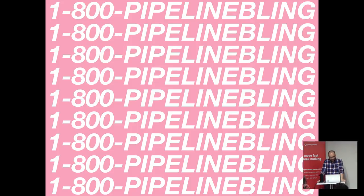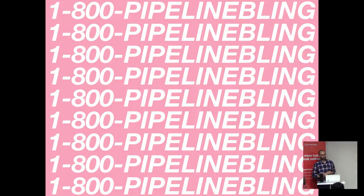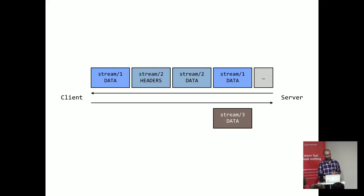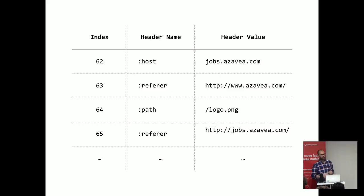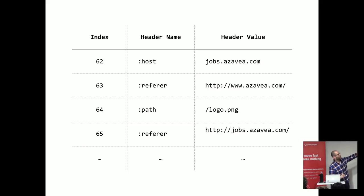Q: A question about the indexing — there's that 0-to-61 index table. You mentioned the stuff that's not in that table also gets indexed, and the Huffman encoding is for data that hasn't been indexed — is that correct? A: For the transmission of data that hasn't been indexed — the first time you see a value that hasn't been put into the table, like the first time you see jobs.avazia.com with the host header, that gets Huffman encoded. After that, you just use the index.